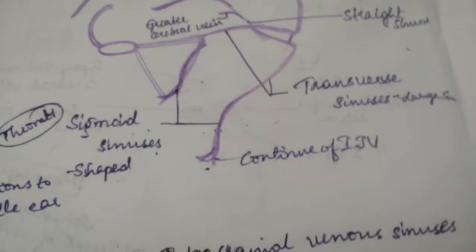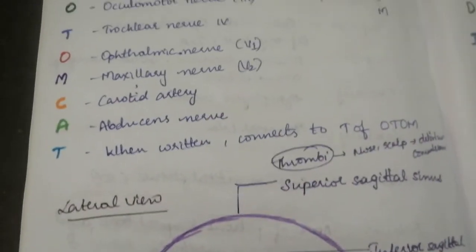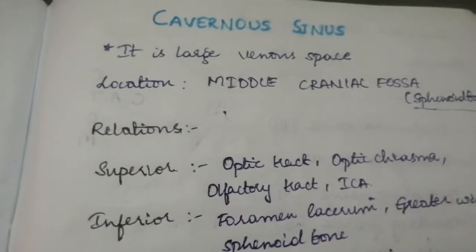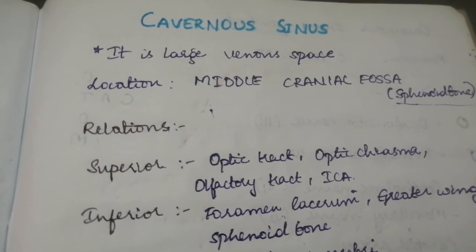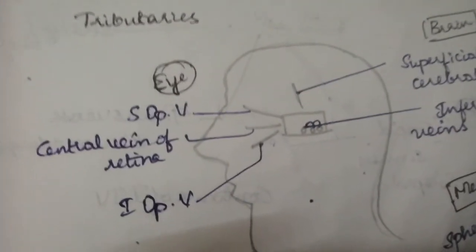And it is combination of internal jugular vein. This is your intracranial venous sinus and it contains, you have here tributaries and your relations locations. These are able to write in your exam point of view with a five marker and you should draw the diagrams too.